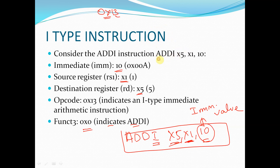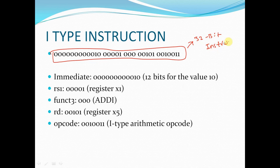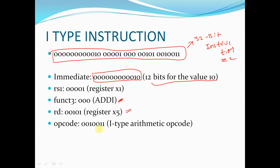If we convert this instruction into binary format it will look like a 32-bit instruction. The assembly language instruction is converted into machine language like this. The immediate value occupies 12 bits, RS1 is 00001, funct3 is 000 indicating add operation, the destination register address is 00101 which is register x5, and the opcode is 0010011.